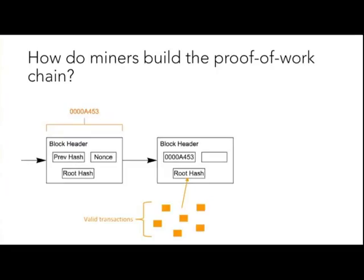What I want to show you first is a proof-of-work chain that is being created. If we look at this, you have two block headers here, and a block header is all the information you need to validate a block within SPV. The way that SPV works is that a block header contains the previous hash, which is just the hash of the previous block header.